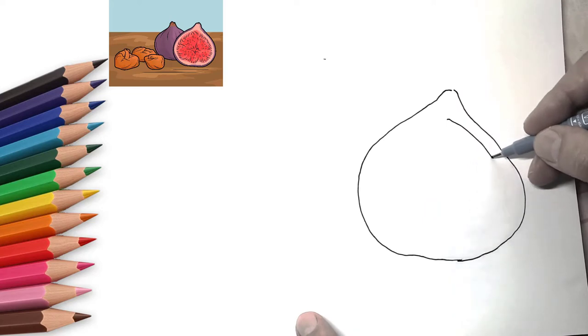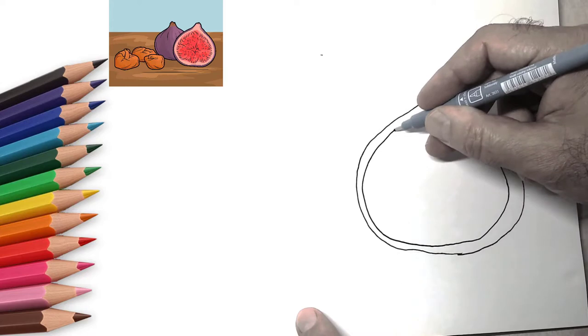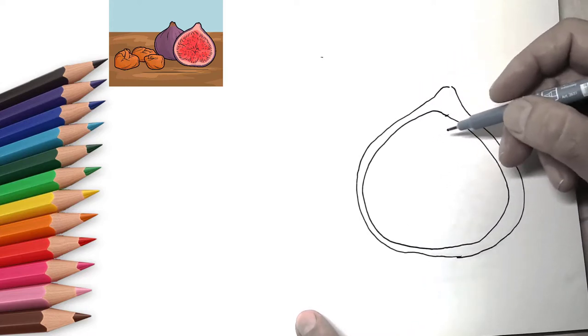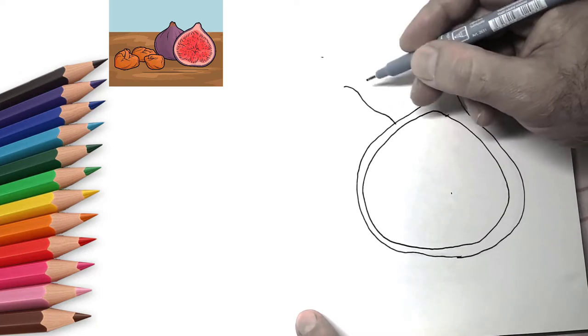First, draw half of the figs. Draw the contour of the fig next.